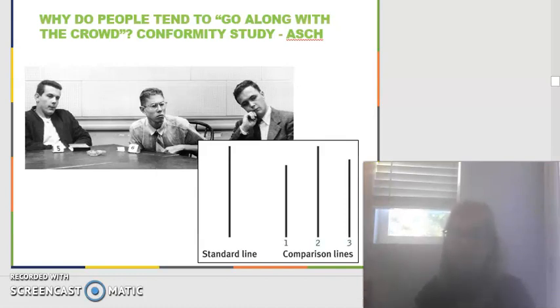You think you're part of a visual study where you're just comparing lines. Little do you know there's confederates or actors in the group and you are the only participant, and those actors tell you the wrong answer.